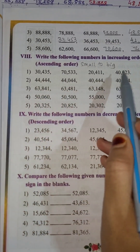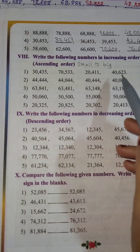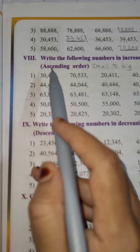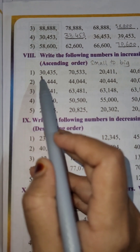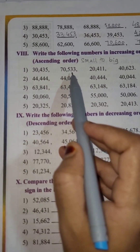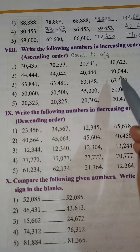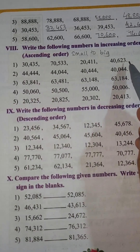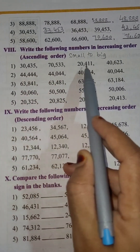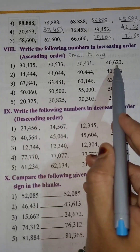Here they have given the numbers — these are 5-digit numbers. You have to arrange these numbers from small to big. So first, among all these 4 numbers, which is the smallest number you have to find?